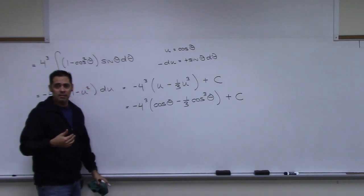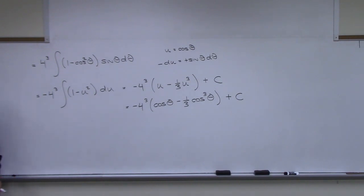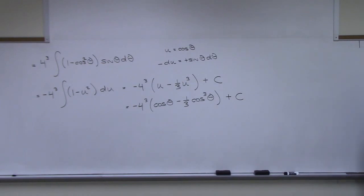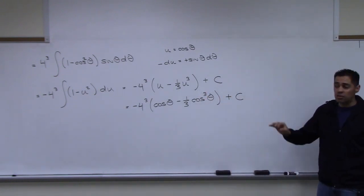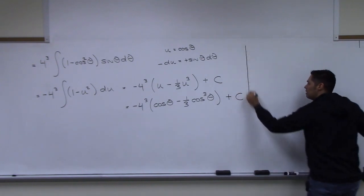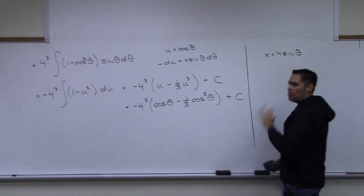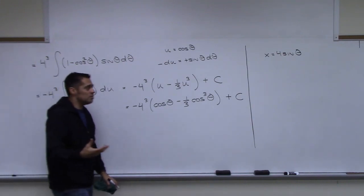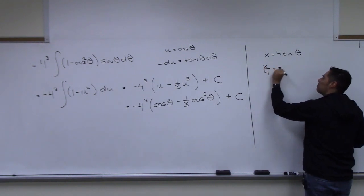This method is more involved than the first, but it will work for some problems the other method won't. Now we need to get cos theta back in terms of x. We go back to the original trig substitution x = 4 sin theta, so x/4 = sin theta, and from that we create a reference triangle.